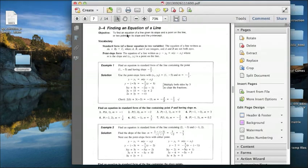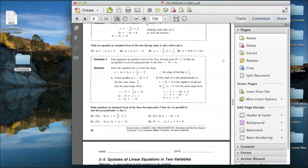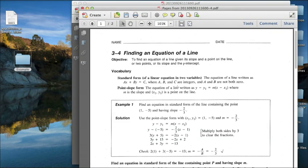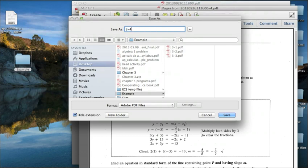And we're going to keep on doing this. Here's Section 3-4. It's from page 7 to 8. Extract from 7 to 8, and I'm going to save this as Section 3-4.